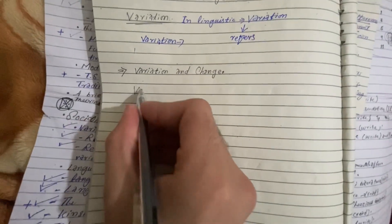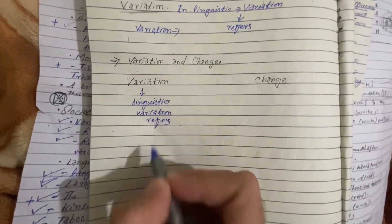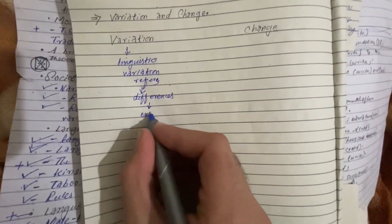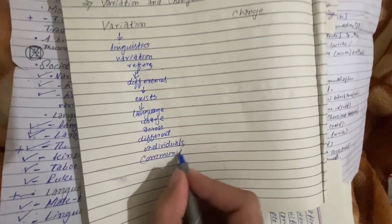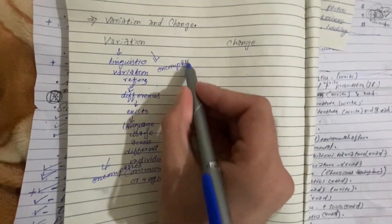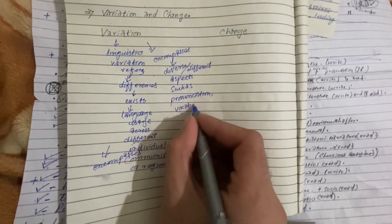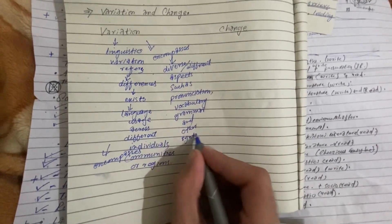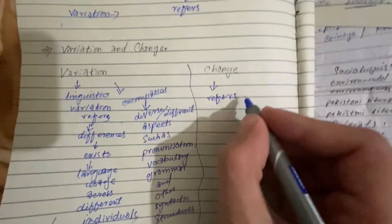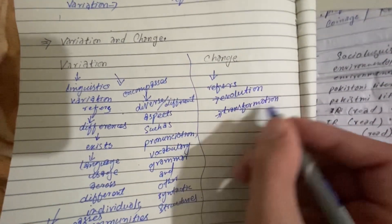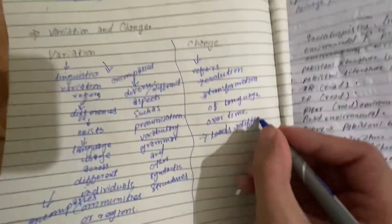Variation and change are two different terms in linguistics. Variation refers to the differences that exist in language usage across different individuals, communities, or regions, encompassing diverse aspects such as pronunciation, vocabulary, grammar, and syntactic structures. Change, on the other hand, refers to the evolution or transformation of language over time, which leads to differences between earlier and later stages of a language.